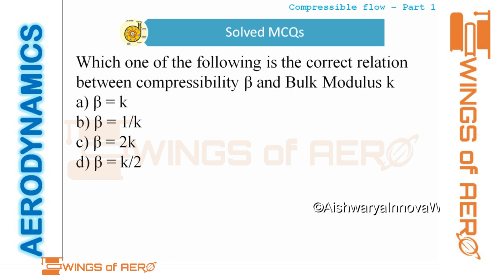MCQ 4: What is the correct relation between compressibility beta and bulk modulus K? They are reciprocals of each other, so beta = 1/K. The right answer is option B.